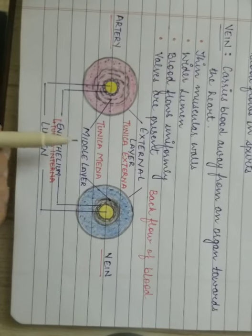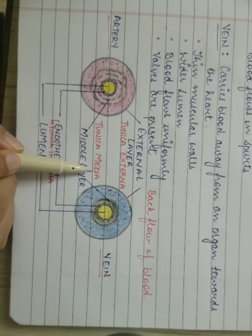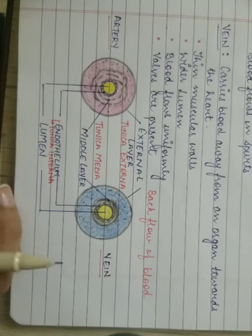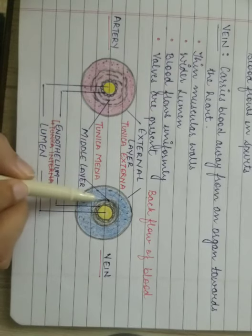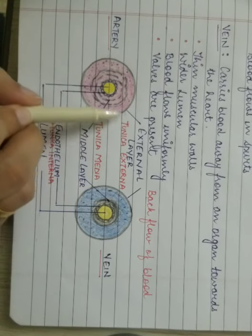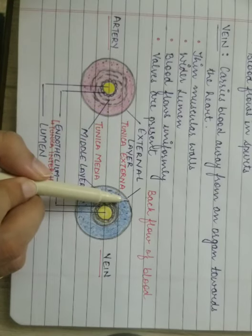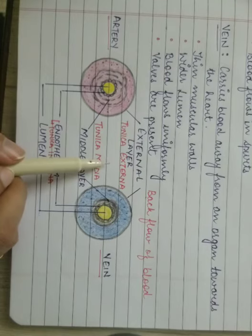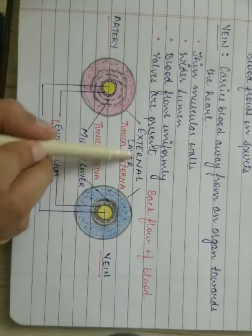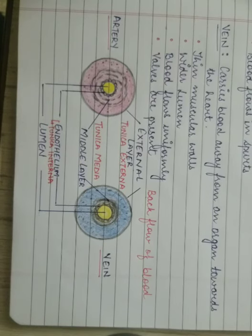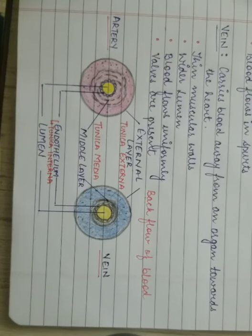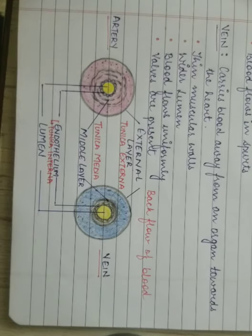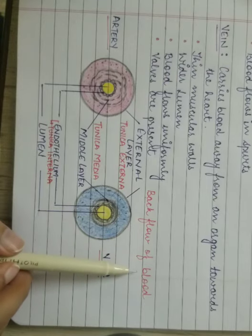The middle layer is known as tunica media, and it is composed of smooth muscles and elastic fibers. Then we have the outer layer, also known as tunica externa, which is composed of connective tissue. A key difference is that in the veins, valves are present, whereas valves are absent in the arteries — this is to prevent the backflow of blood.